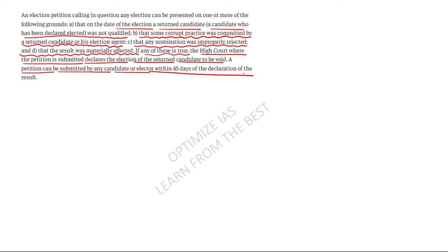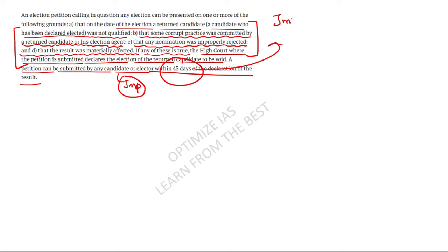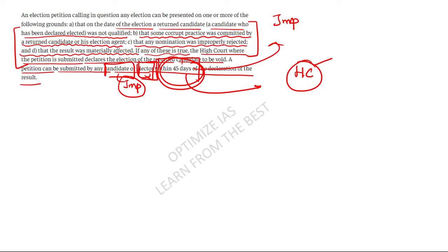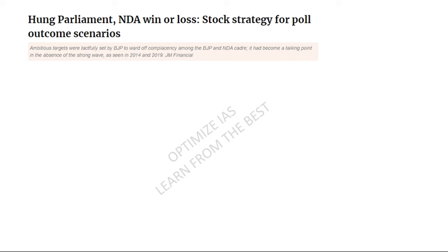An election petition can be submitted by a candidate or elector within 45 days of the declaration of the result. This is very important — within 45 days of the election results being declared, you can challenge the election. The high court can make the election result void under these circumstances. Remember: election petitions are heard at the high court level and must be filed within 45 days of the declaration of the result.